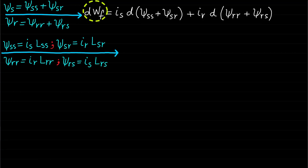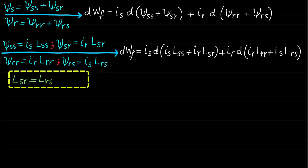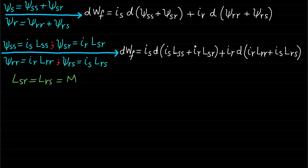Therefore, the change in field energy DWF can be expressed accordingly. Note that LSS represents the self-inductance of the stator winding, LRR represents the self-inductance of the rotor winding, and LSR and LRS represent the mutual inductance between the stator and rotor windings. The mutual inductances LSR and LRS are equal because they have the same geometry, and the mutual inductance can be denoted by capital letter M.